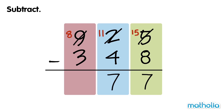Finally, we subtract the hundreds. 8 hundreds minus 3 hundreds equals 5 hundreds. So 925 minus 348 equals 577.